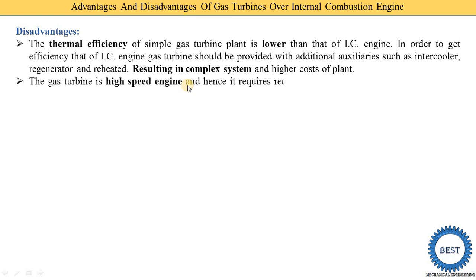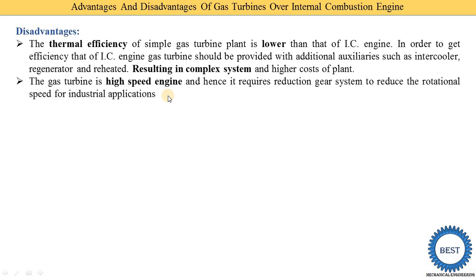The gas turbine is a high-speed engine, and therefore it requires a reduction gear system to reduce the rotational speed for industrial applications. The speed of the gas turbine shaft is very high compared to the IC engine, so reduction gears are needed to bring down the RPM for practical use.